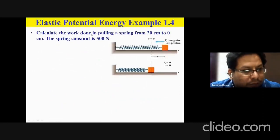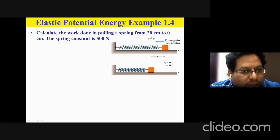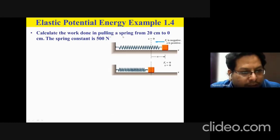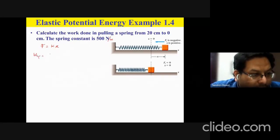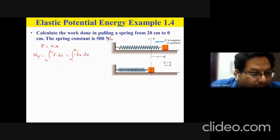The example question we are going to solve: find the work done in pulling a spring from 20 centimeters to zero centimeters. This is the work done by the spring, not the work I have to do. The spring constant is 500 newtons per meter. The work done by the spring between two positions x₁ and x₂ is the integral of force times displacement, and the force of the spring is minus kx.